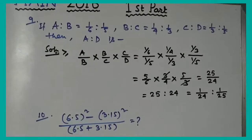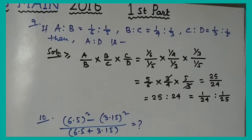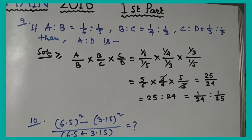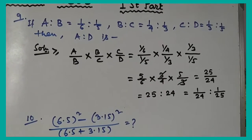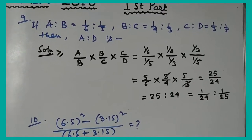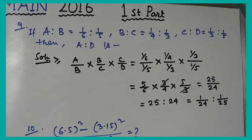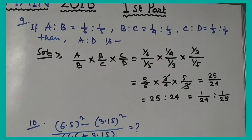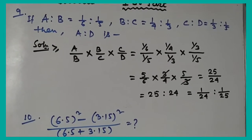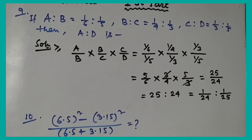Question number 9: If a:b = 1/6 : 1/5, b:c = 1/4 : 1/3, and c:d = 1/3 : 1/5, find a:d. Converting: a:b = 5/6, b:c = 3/4, c:d = 5/3. Multiplying: (5/6) × (3/4) × (5/3) = 25/24. So a:d = 25:24.